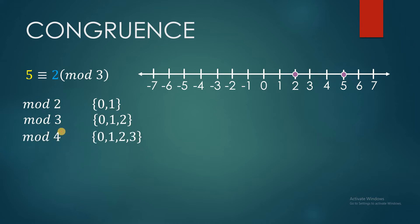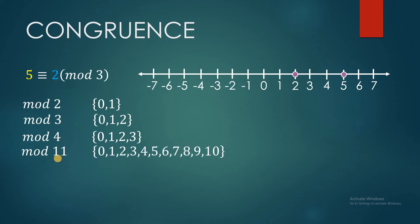Same again if we have modulo 4, this number line will be categorized into 4 values only. Looking at the pattern, the highest number is always 1 less than the value of the modulo. So if we have a higher value, say modulo 11, the highest number would be 10 and the lowest would be 0. So how can we apply this modulo on the number line?